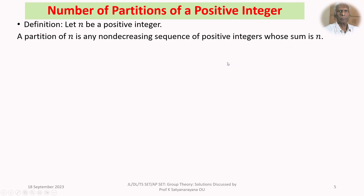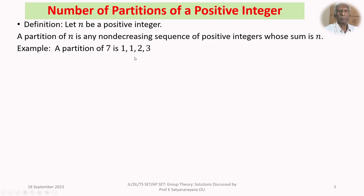For example, take N = 7. It can be written as 1, 1, 1, 1, 1, 1, 1 (seven ones) — that is one partition. You can also write five ones and 2: that is also a partition. Similarly, 1, 1, 2, 3 is also a partition, because it is a non-decreasing sequence and the sum is 7. So 7 has more than one partition.